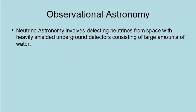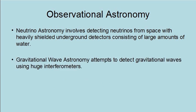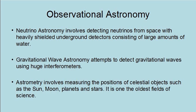Neutrino astronomy involves detecting neutrinos from space with heavily shielded underground detectors consisting of large amounts of water. Gravitational wave astronomy attempts to detect gravitational waves using huge interferometers. Astrometry involves measuring the position of celestial objects such as the sun, moon, planets, and stars. It is one of the oldest fields of science.